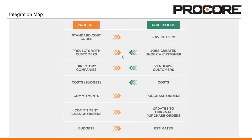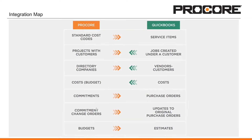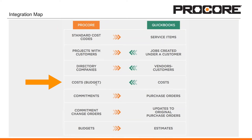The next piece is really the workhorse of the integration. You can create your commitments, subcontracts, and purchase orders in Procore and then sync those over to QuickBooks as purchase orders. You can also create your commitment change orders in Procore and sync those into QuickBooks, and it updates to the original PO. You can also create your budgets in Procore and sync those over to QuickBooks as an estimate. What's really nice is being able to push costs from your accounting system seamlessly into your Procore budget via the integration, with an extra column inside Procore's budget tool showing your job-to-date costs or actuals flowing in directly from QuickBooks.